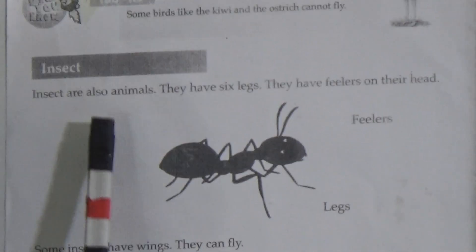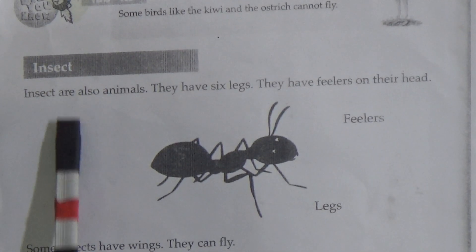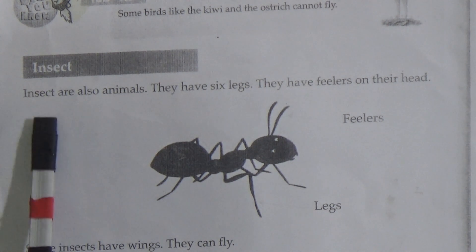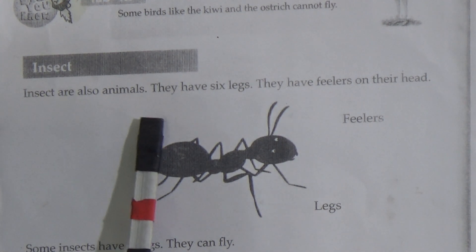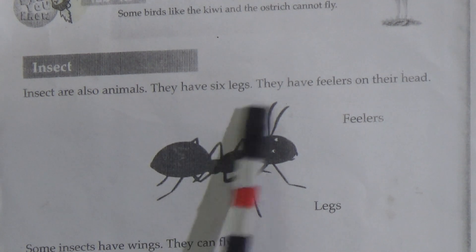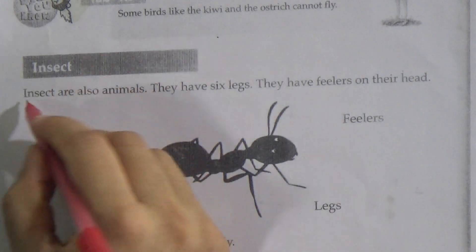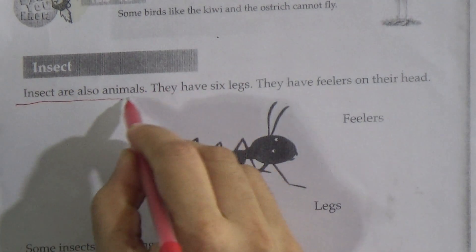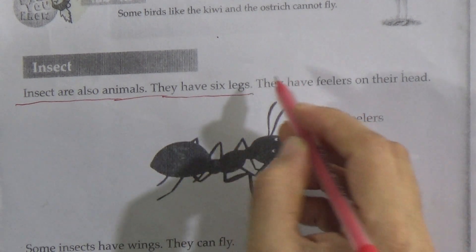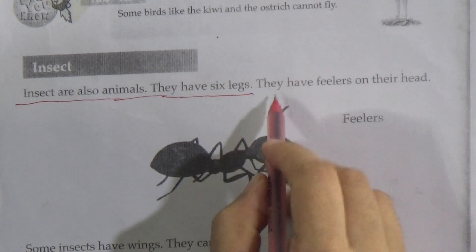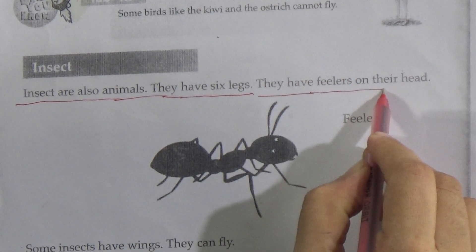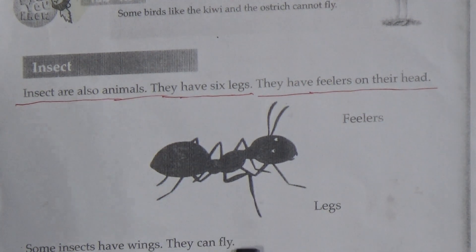Chapter 7: Animal Genre. Follow this class with your textbook, page number 48. Insects are also animals — they have six legs and they have feelers on their head. My dear students, underline this line: insects are also animals, they have six legs, and they have feelers on their head.